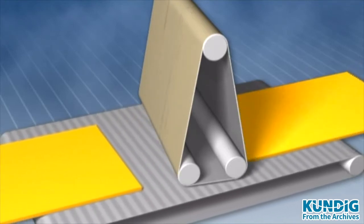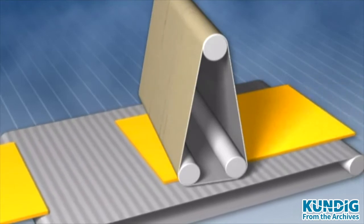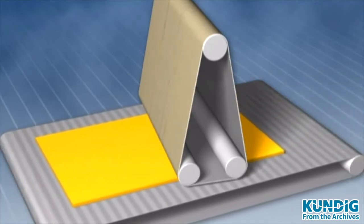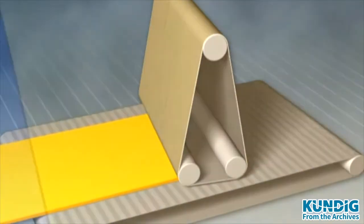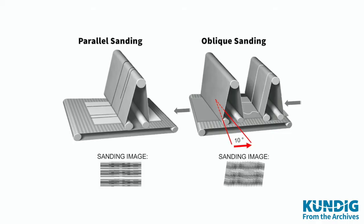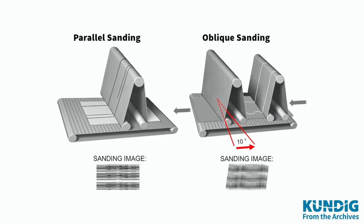The same applies to unwanted oscillating belt tracking lines. With Kündig's shear plane sanding technique, a better sanding image is produced. Instead of surfaces with visible sanding lines, perfectly brilliant surfaces are created.